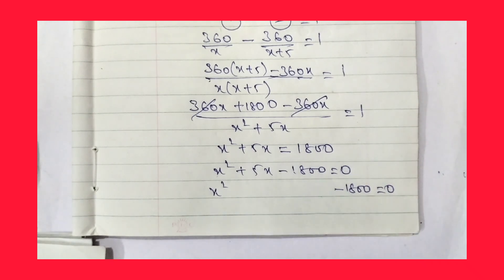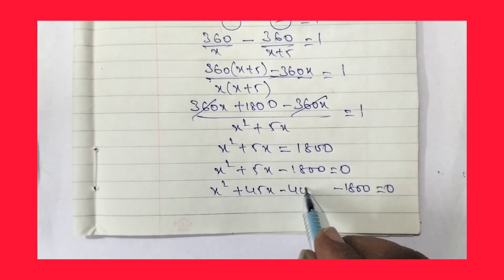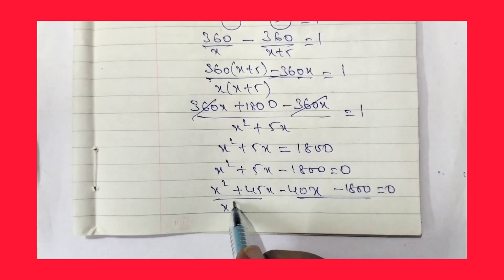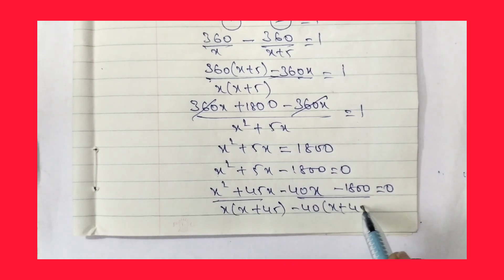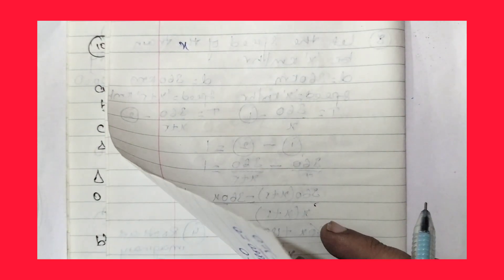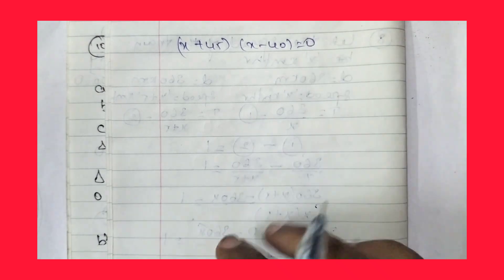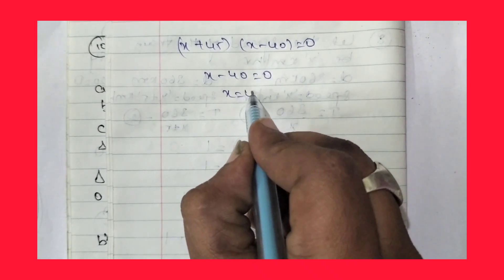So x² + 5x - 1800 = 0. We need two numbers with product 1800 and sum 5: those are 45 and -40. So (x + 45)(x - 40) = 0. Therefore x - 40 = 0, giving x = 40 km/hr. So the speed of the train is 40 km/hr.